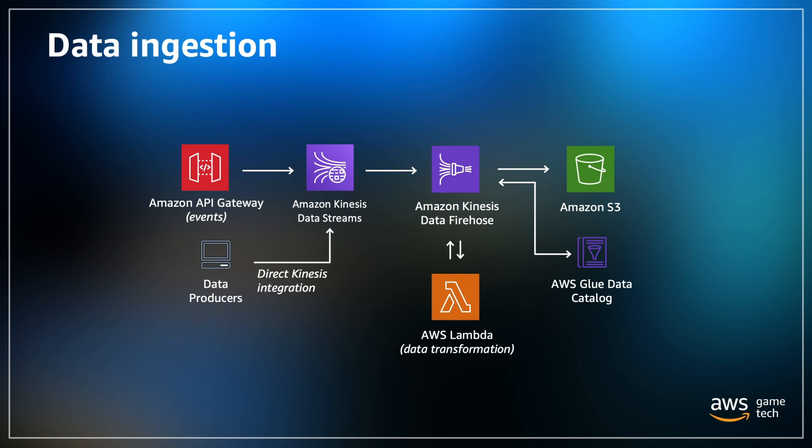The Glue data catalog is also used for data ingestion. It's a predefined table of metadata that contains references to your data to be used for analytics and ETL — extract, transform, and load. The Kinesis data firehose uses the Glue data catalog to validate the schema and load compressed parquet data for optimized query performance.